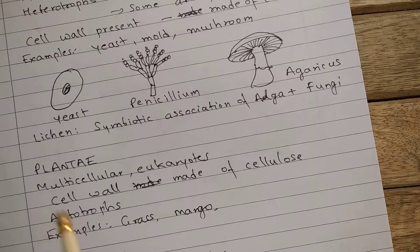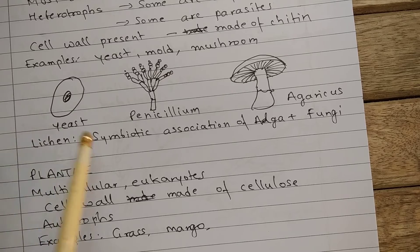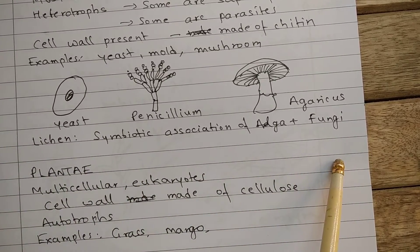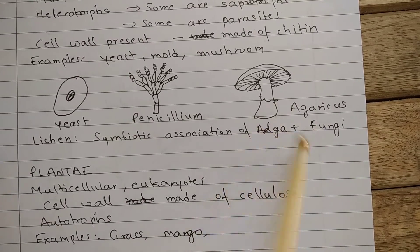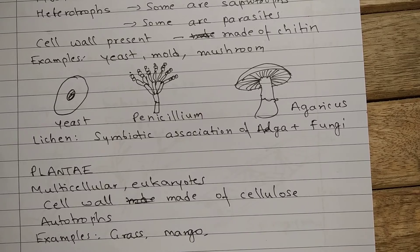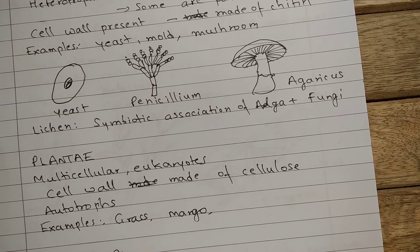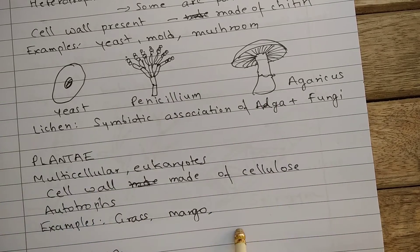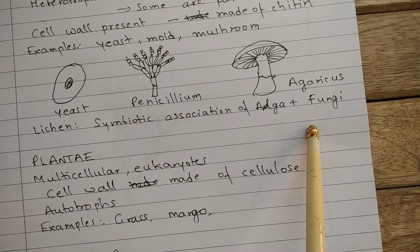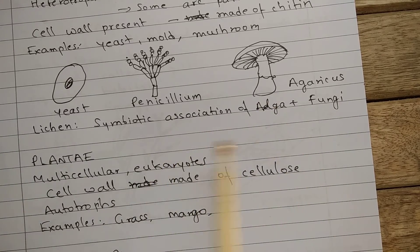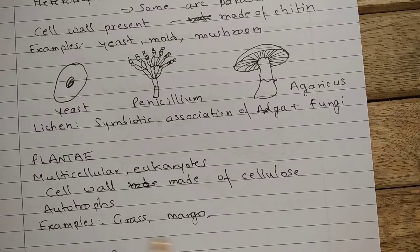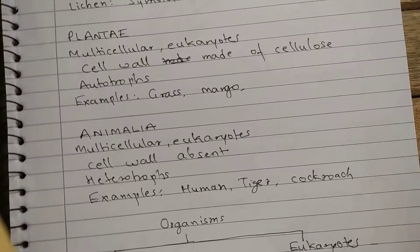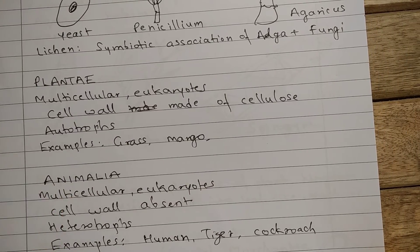Then there are lichens. Lichen is a symbiotic association of an alga and a fungus. In this case, both the alga and fungus live together and both of them benefit each other. The fungal component makes the base layer and absorbs minerals and water from the substratum, and the algal component utilizes those raw materials and sunlight to prepare food. The fourth kingdom is Plantae, or kingdom plant.